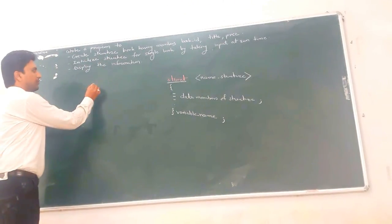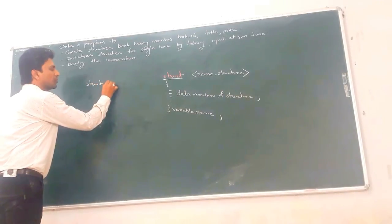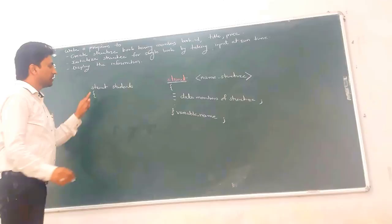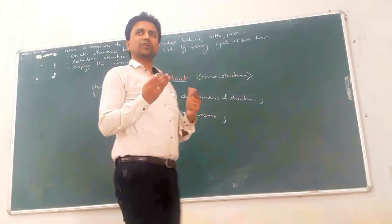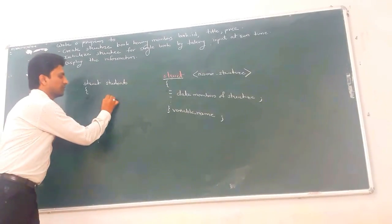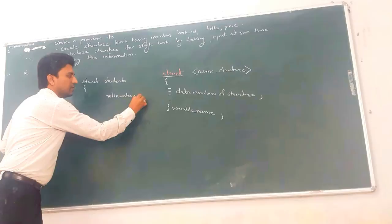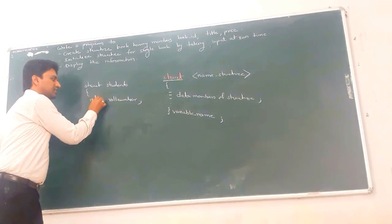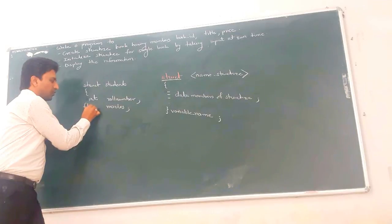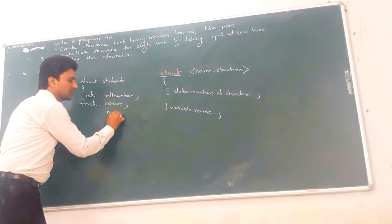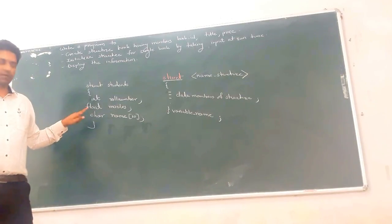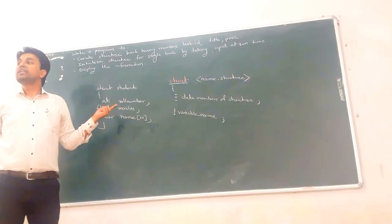For example, if you want to create a structure for students, write the keyword 'struct', then the name 'student', then write the data members. We require the roll number of the student — the data type is integer. The second data member is marks, with data type float. The third data member is the name of the student, with data type character array or character pointer — you can use either.